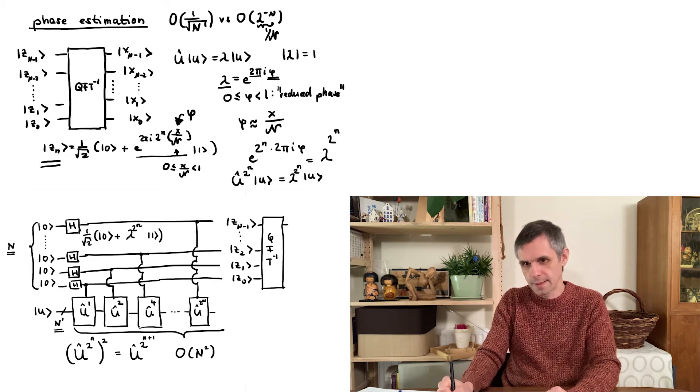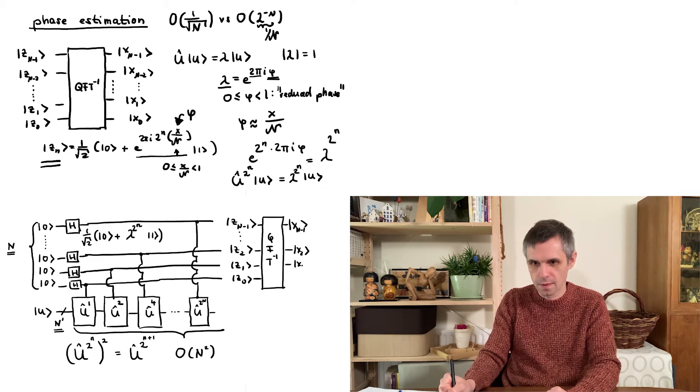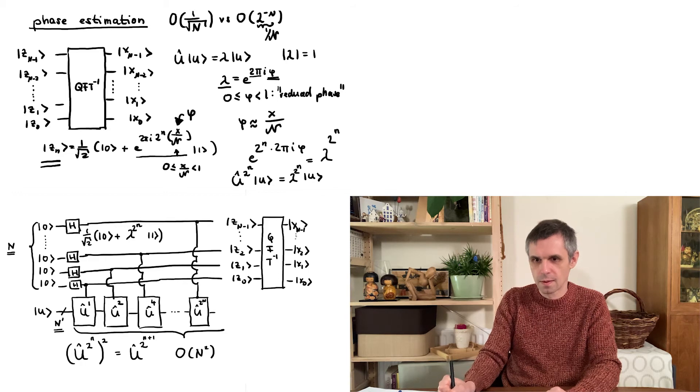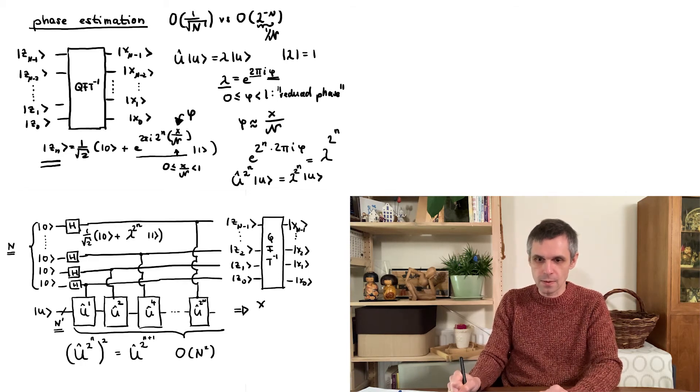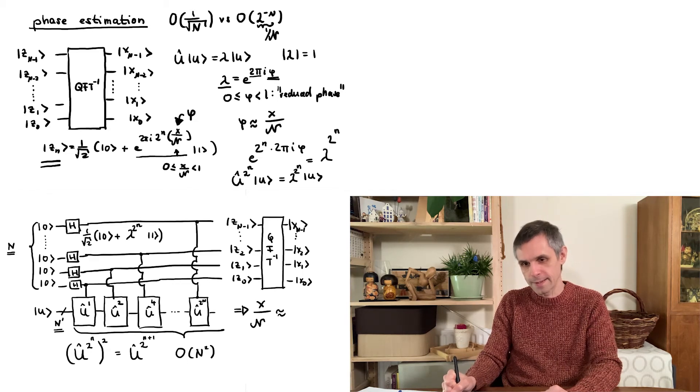So then we just run these states through the inverse of the quantum Fourier transform. So this we then read out in a measurement. And this gives us our n-bit approximation of our reduced phase phi.